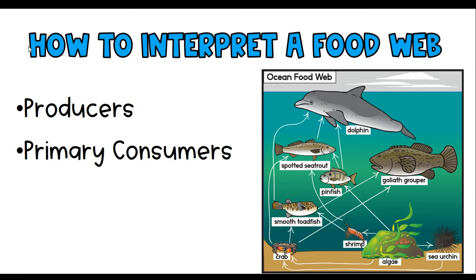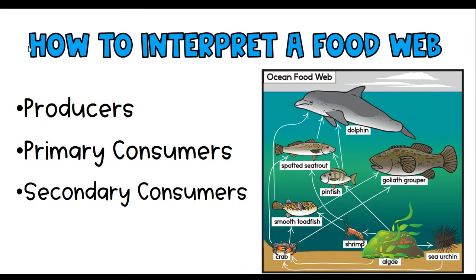Then we've got our next level, which is secondary consumers. Secondary consumers are an animal consuming another organism that consumes plants. Using the shrimp as an example: the shrimp consumes the plant — that's the first consumption. Then the smooth toadfish is also consuming the shrimp — that's the second consumer in that food chain, so we call it a secondary consumer. We could look at lots of secondary consumers in this example, like the spotted sea trout, which also eats the shrimp that eats the algae.